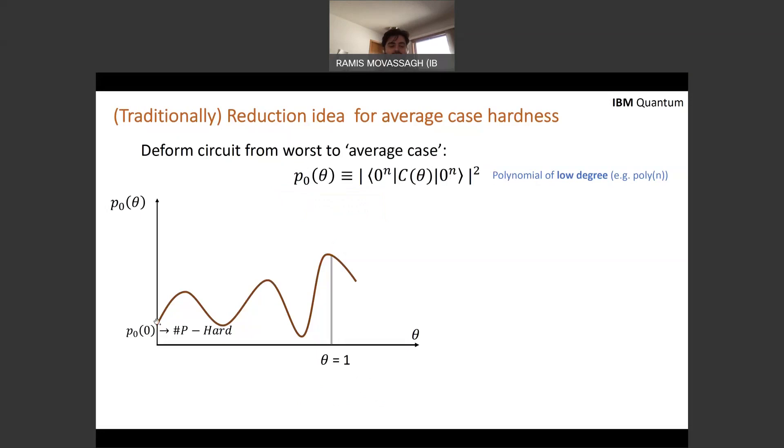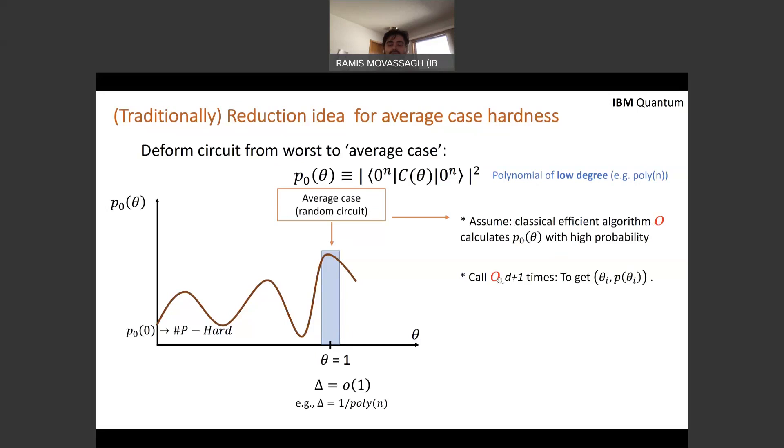Now, at the deformation by construction, suppose has the structure that theta equals zero is the Sharp-P hard known worst case circuit. But at theta equals one corresponds to a totally random circuit, where this neighborhood can be negligibly small, this width. Now, on the way of contradiction, you say, assume there exists a classical algorithm O that can calculate P_0 of theta with high probability.